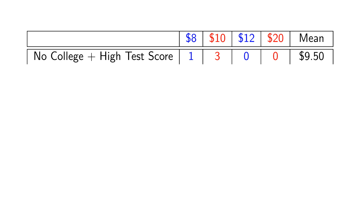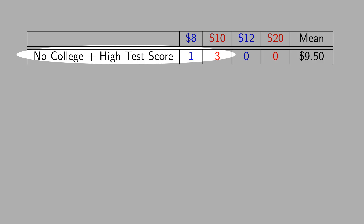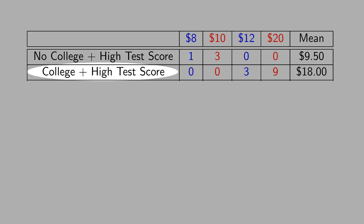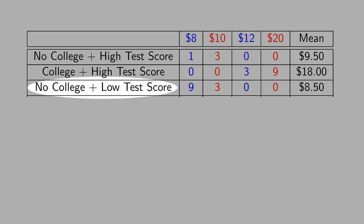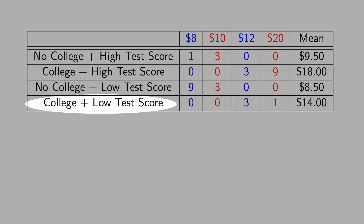We can construct a more complete table now that we know red people are more likely to go to college. In the category no college and high test score, you have more red people because of the high test score. In the category college and high test score, we also have more red people — 9 against 3. In the category no college and low test score, it is the opposite: we have more blue people, 9 against 3. And in the category college and low test score, we also have more blue people — 3 against 1.